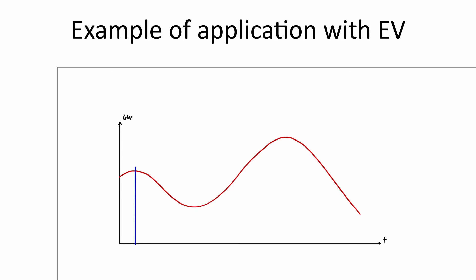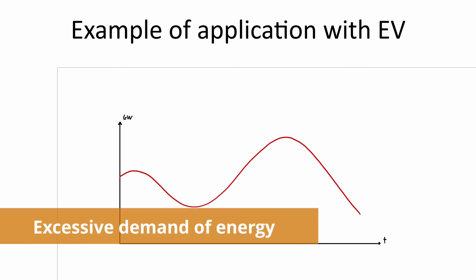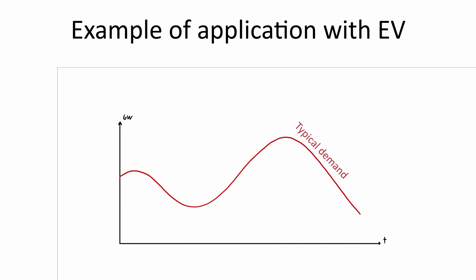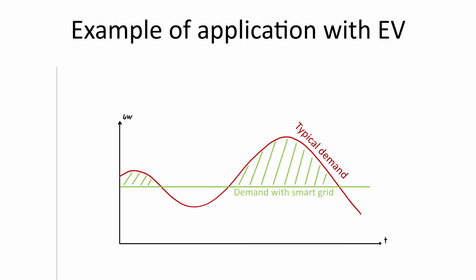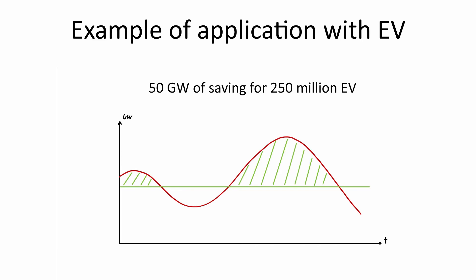One in the afternoon just after work, and the other just after average bedtime. In these two periods of time most of the vehicles are charging, so we have an excessive demand of energy on the grid. However, thanks to the smart grid concept and the use of smart chargers connected to the internet, it's possible to change the curve, avoiding excessive stress on the grid, allowing roughly 50 GW of saving for every 50 million electric vehicles.